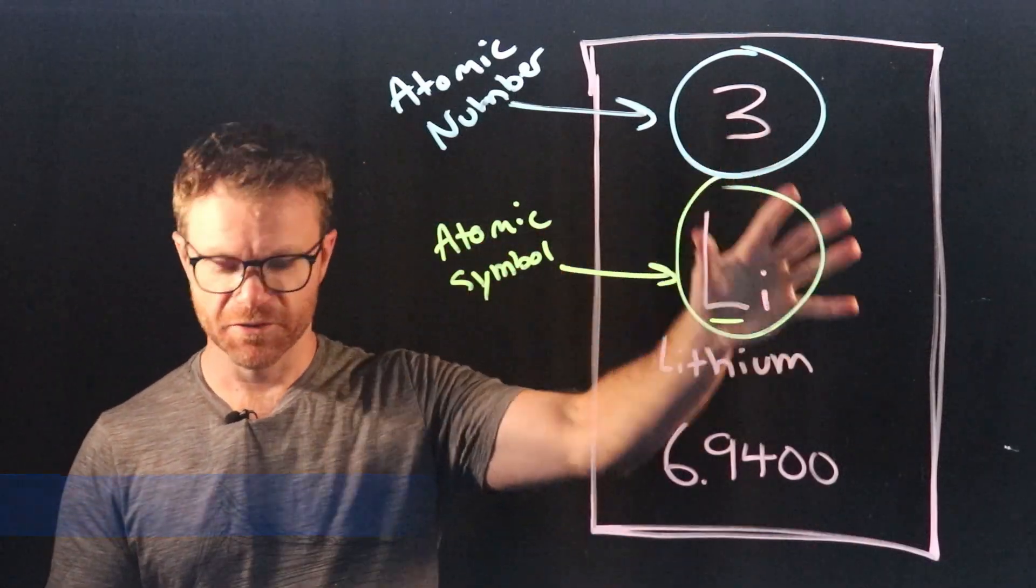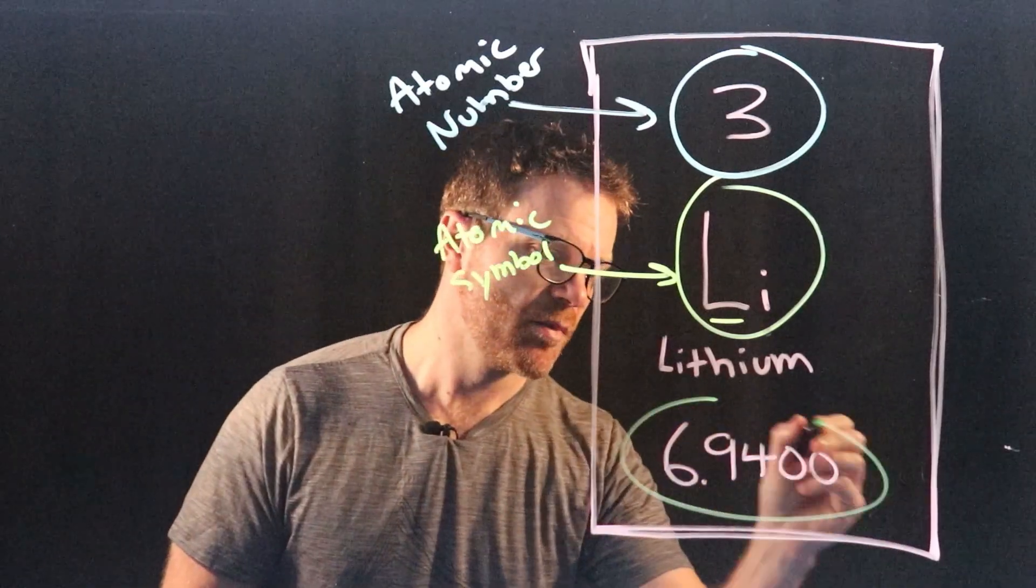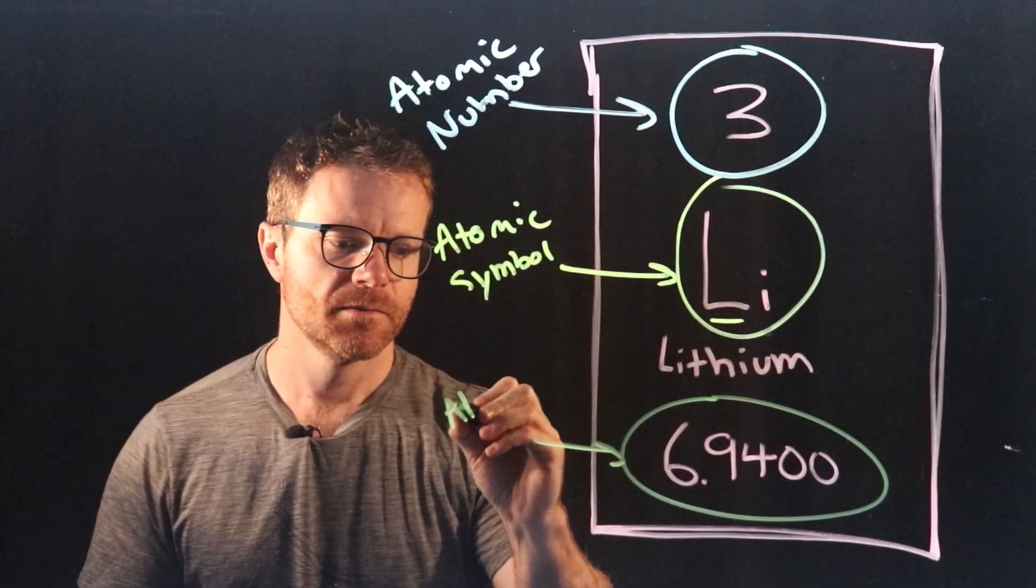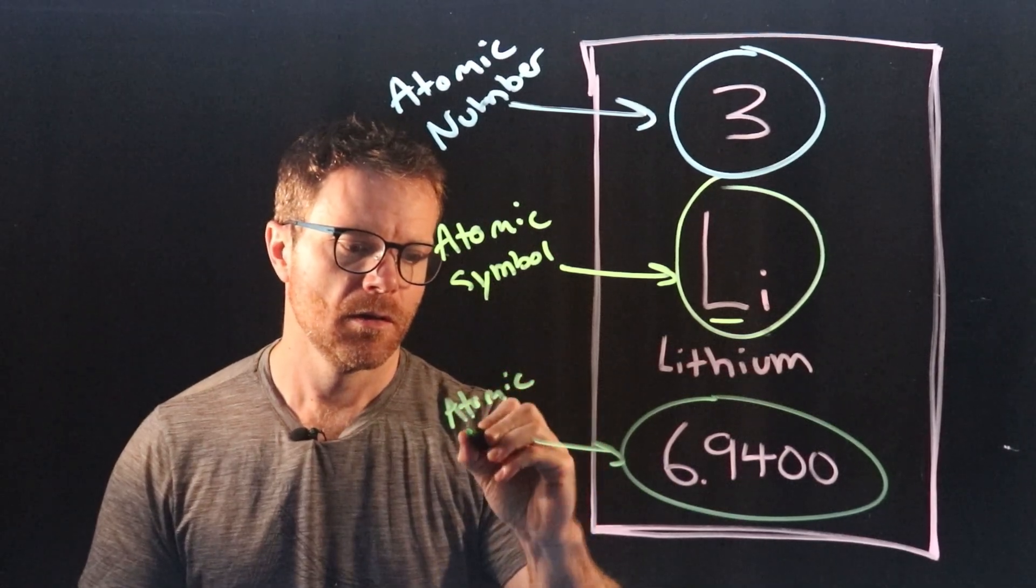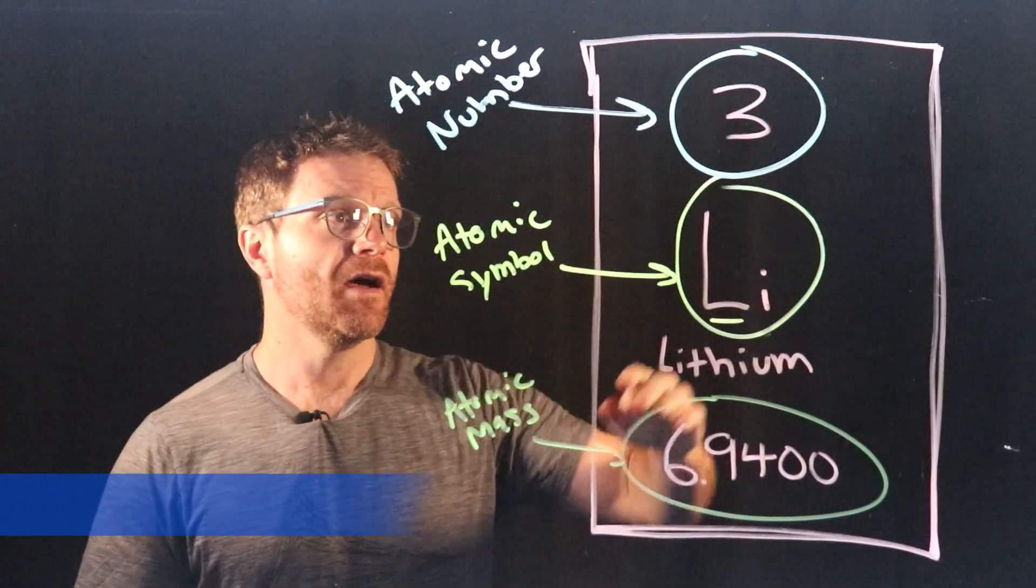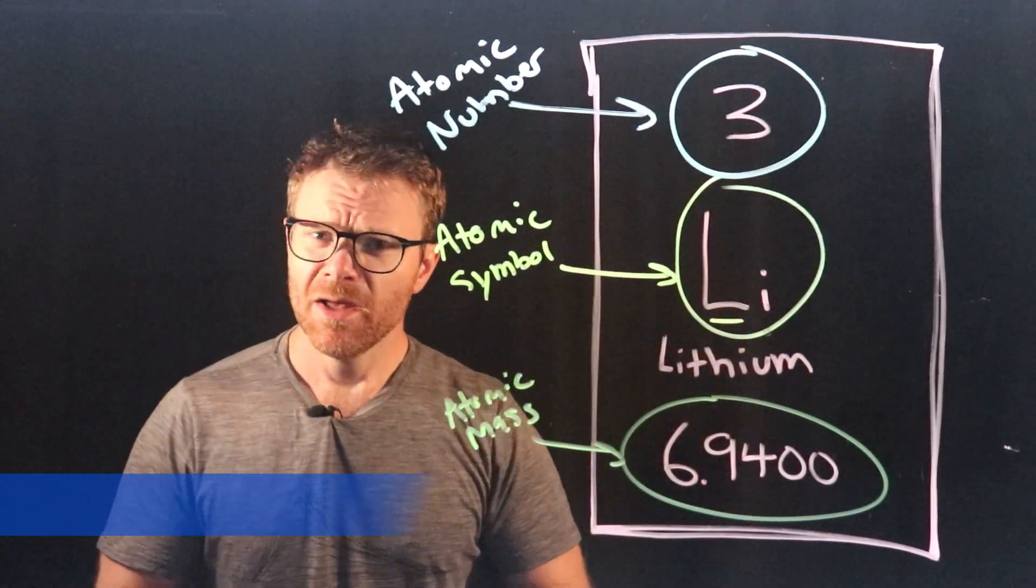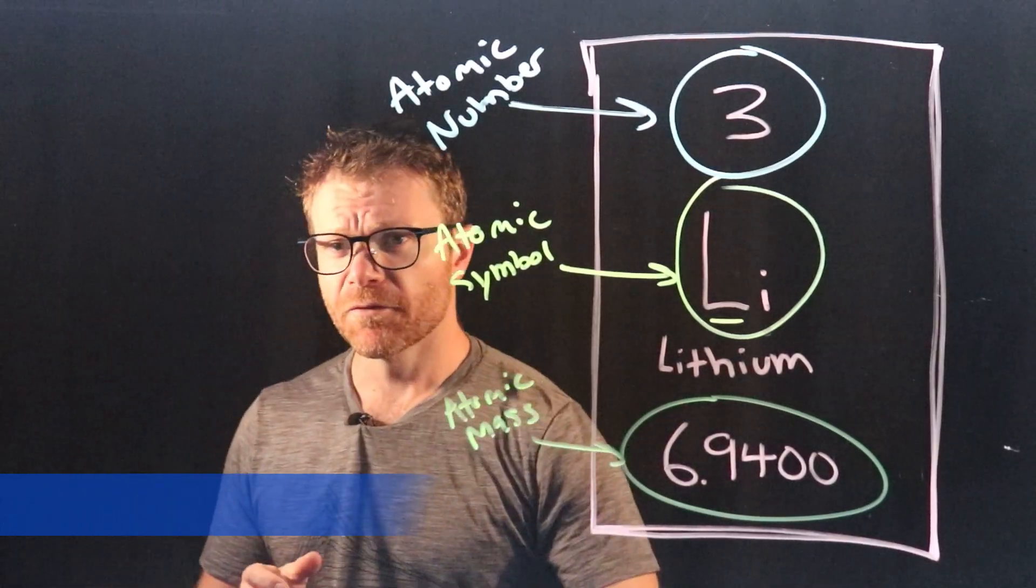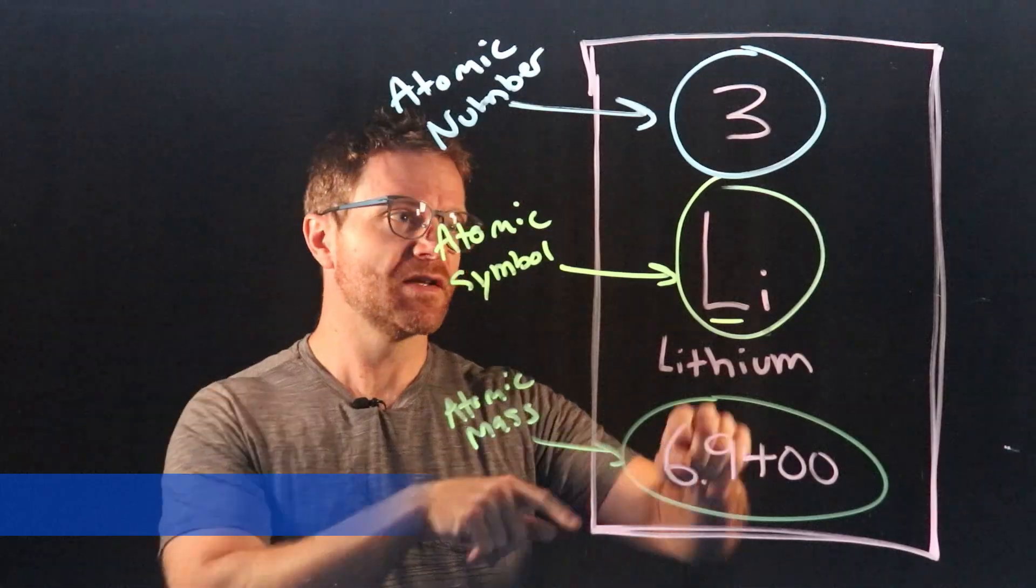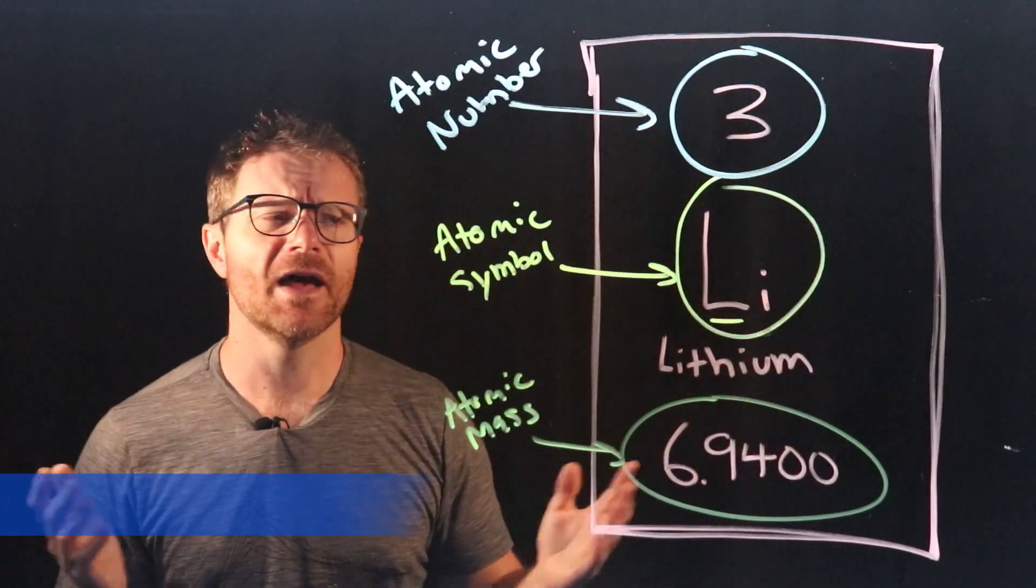There's another number that you'll see here. Down at the bottom, it's this number with a bunch of decimal places. This is the atomic mass. Now it's important to point out real quick that in this case, the atomic number's at the top and the atomic mass is on the bottom. That's not necessarily the convention for every element on every periodic table. Some might have the atomic mass at the top and the atomic number at the bottom or one on the left and one on the right or something like that.